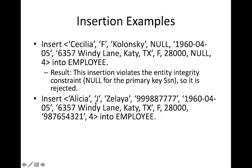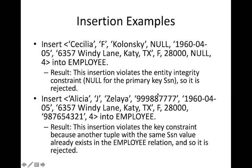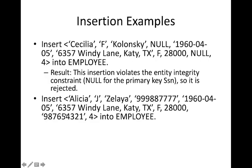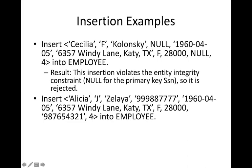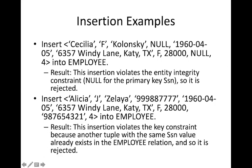The second example tries to insert 'Alicia J' with SSN 99887777. We are not inserting a null SSN value, but there is a problem: if we check the table, we already have the same SSN value for another person. We cannot give the same SSN value to a different person — that violates the key constraint because SSN must be unique. This insertion is rejected because another tuple with the same SSN value already exists in the employee relation.